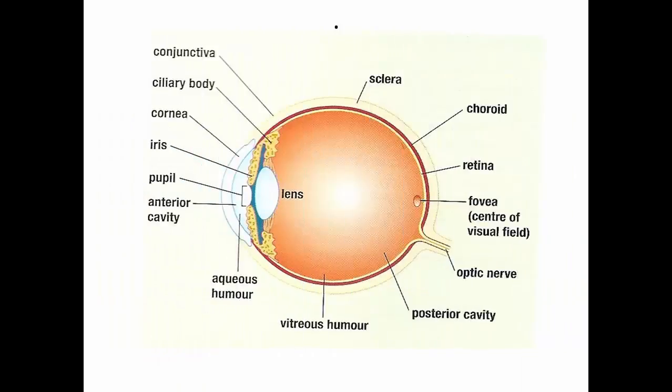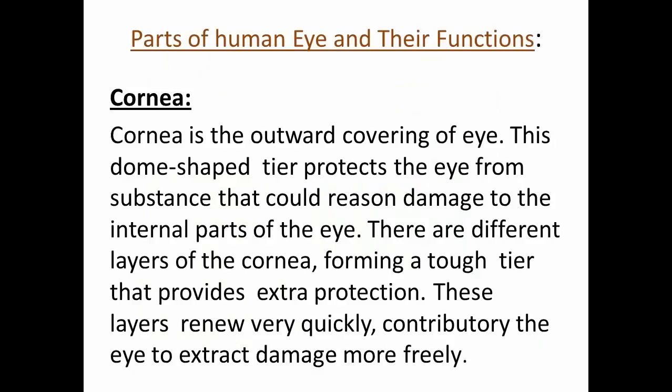The human eye is the most complex part in the body. The different parts of the human eye allow the body to receive light and perceive objects with proper color and depth. Now let's know about the parts of the eye and their function.